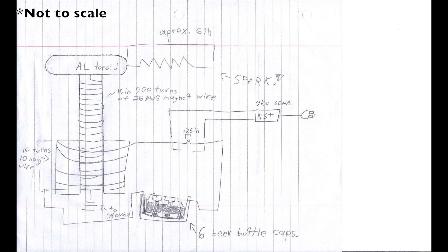One of the spark gap electrodes goes to the capacitor bank, which is made out of six beer bottle or salt water capacitors wired in parallel.